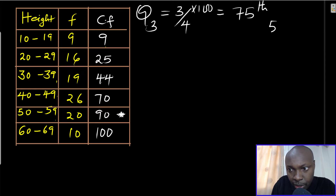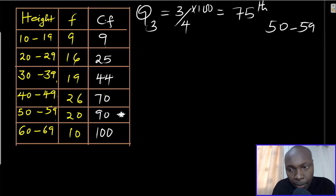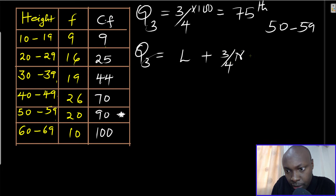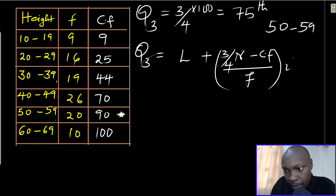The 75th position lies where the cumulative frequency reaches 90, so the class is 50 to 59 — that is where we shall find the upper quartile. To calculate Q3 we use the formula: Q3 = L + [(3n/4 - cf) / f] × i.